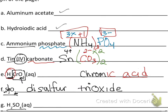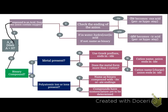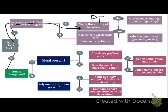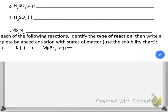For H2SO4 (aq): it has H at the start, and SO4 on the back of the periodic table is sulfate — an '-ate' ending again. Following the same rule, sulfate → sulfuric acid. We add letters to make it sound better, giving us 'sulfuric acid' — a compound we've used in the lab before.